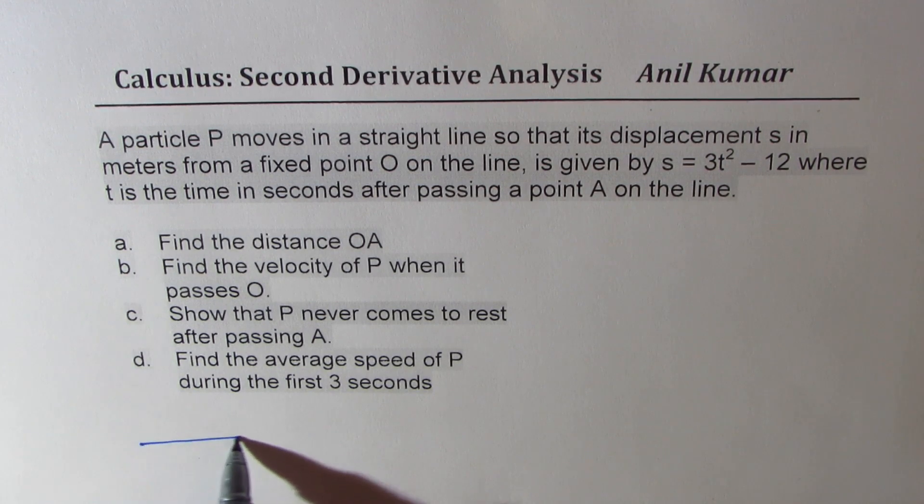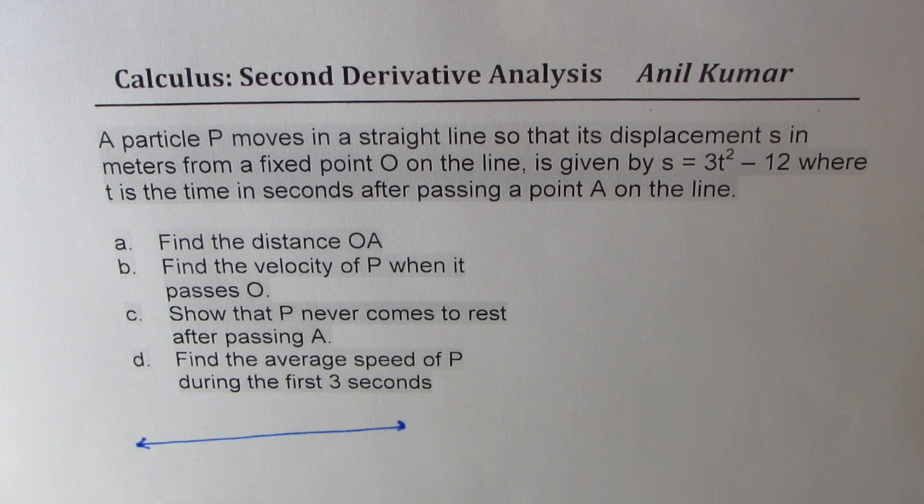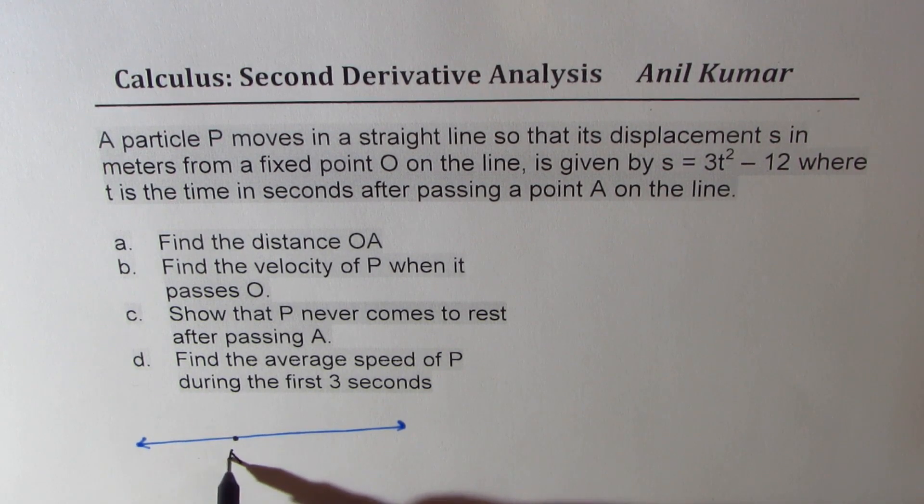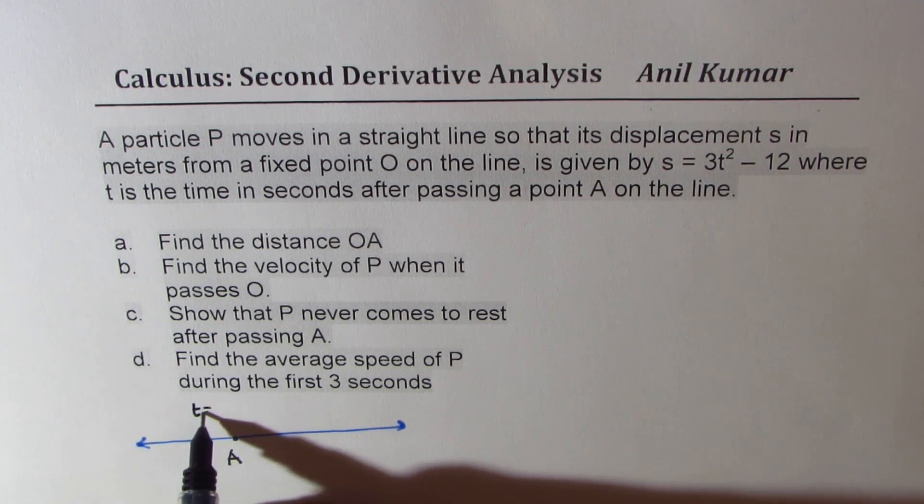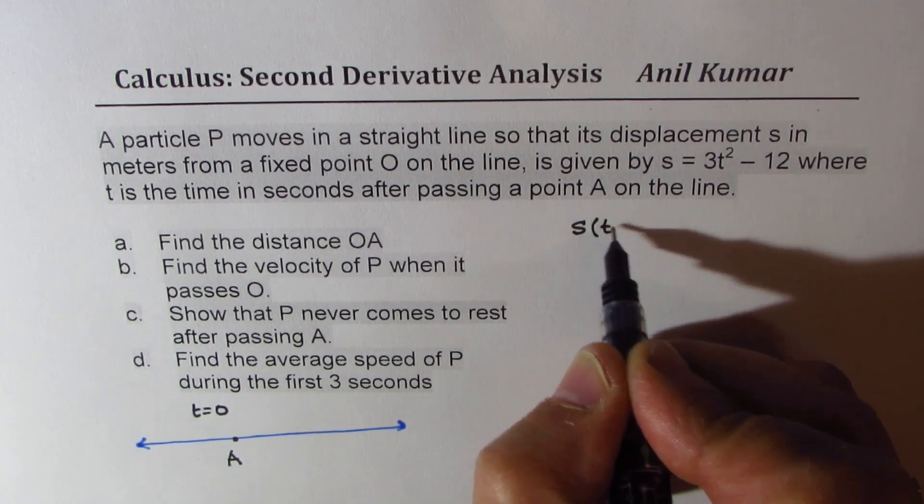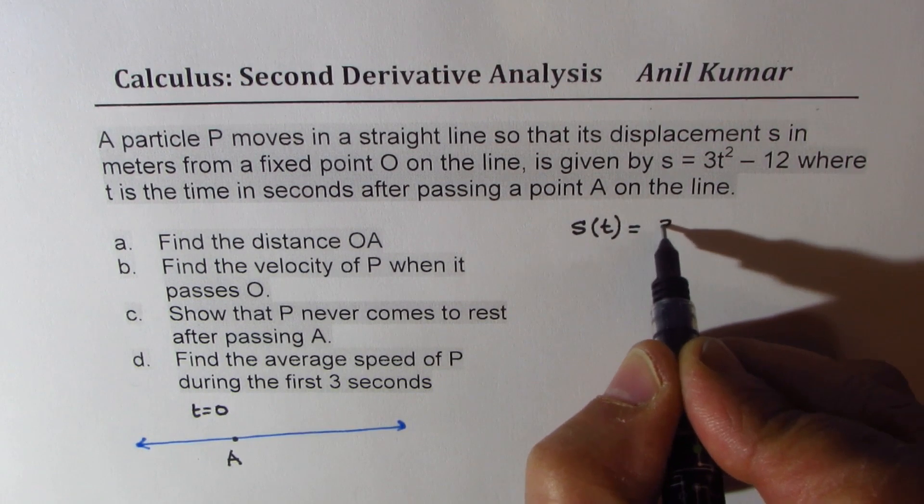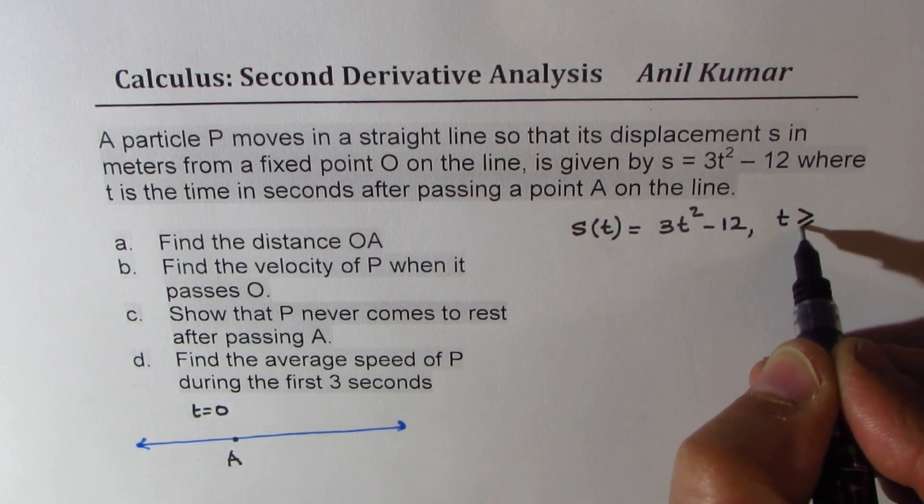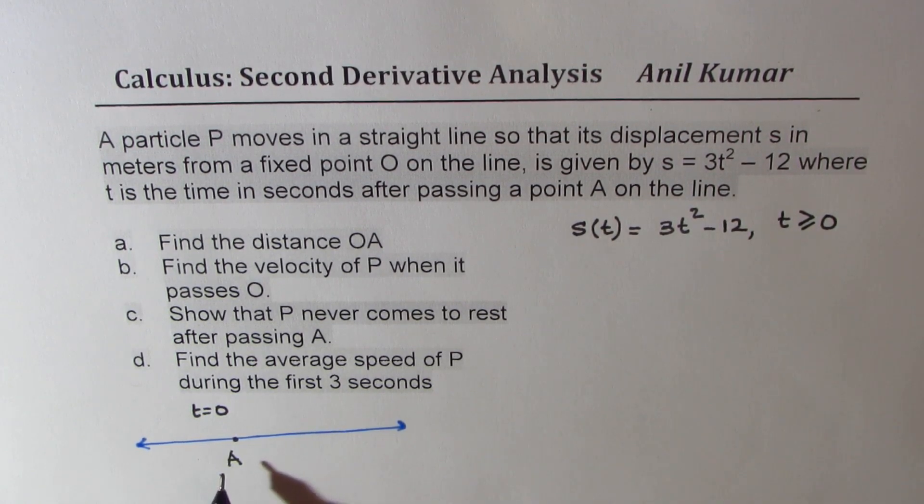We are talking about motion along a straight line. So we are also given here that there is a point A somewhere. We don't know where this point is. There is some point A and at this point A, t equals 0. So we are talking about displacement s(t) equals 3t squared minus 12 where t is greater than or equal to 0 and t is 0 when the particle crosses point A.